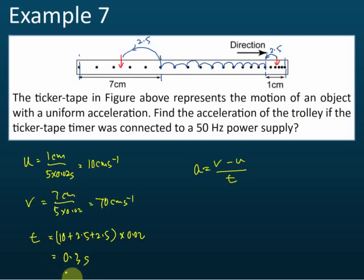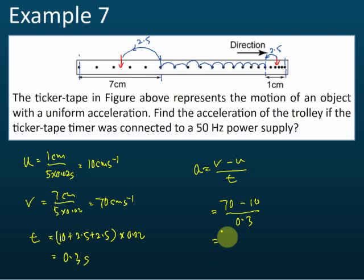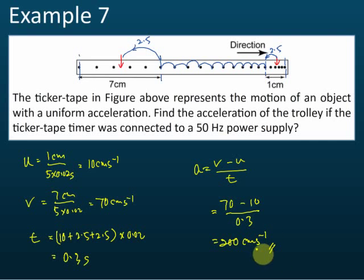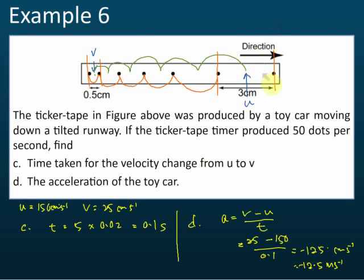Now we have u, v, and t, so we can plug into the equation: 70 minus 10 divided by 0.3. That gives 60 divided by 0.3, which equals 200 cm per second squared. That is how we find the acceleration.